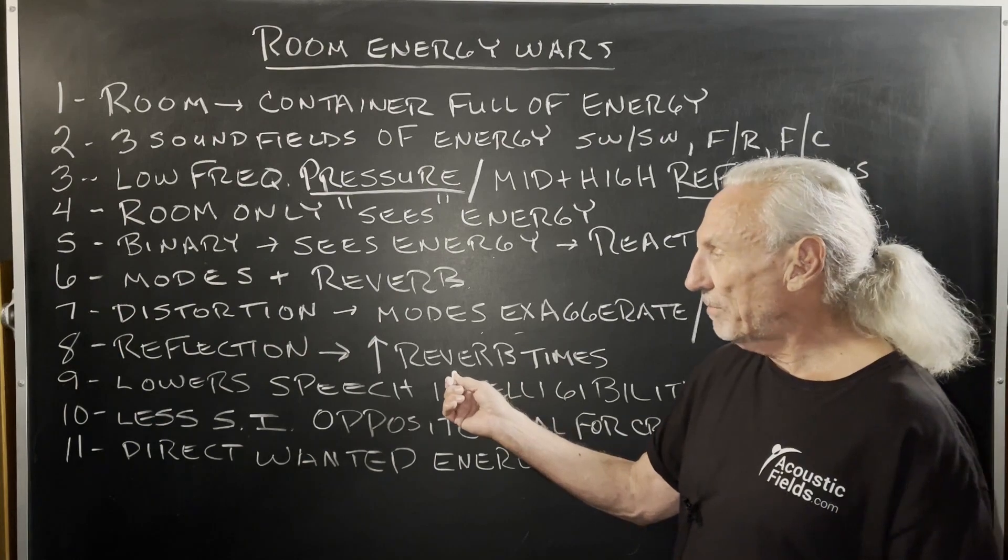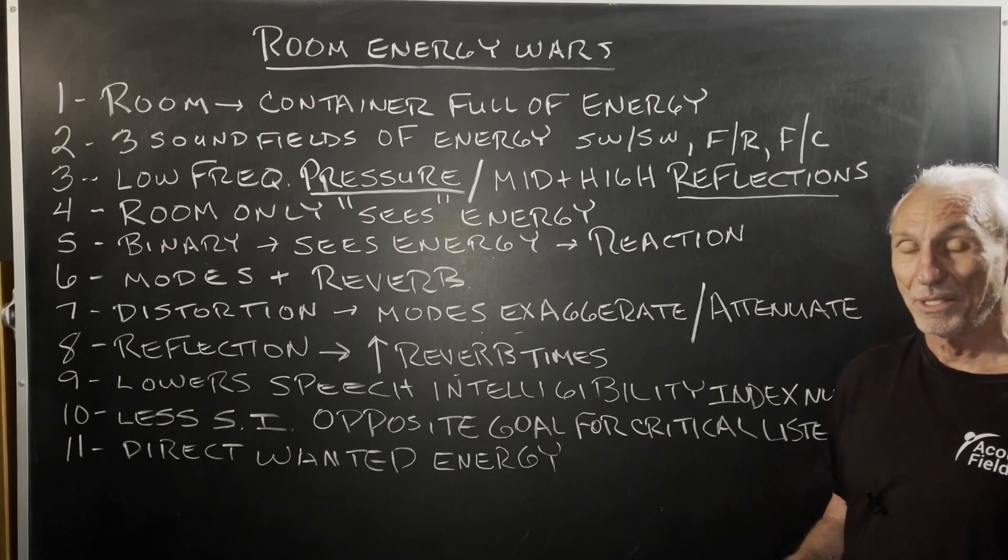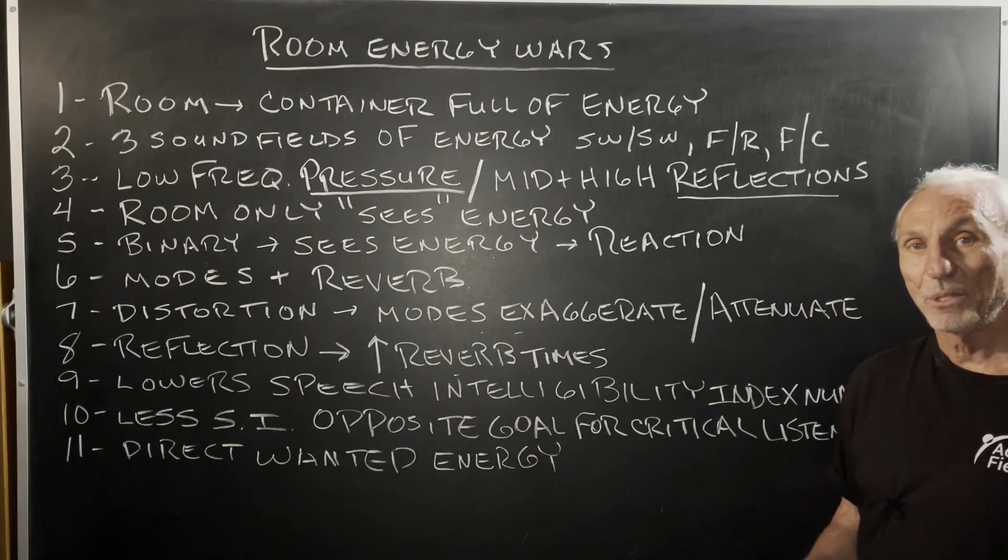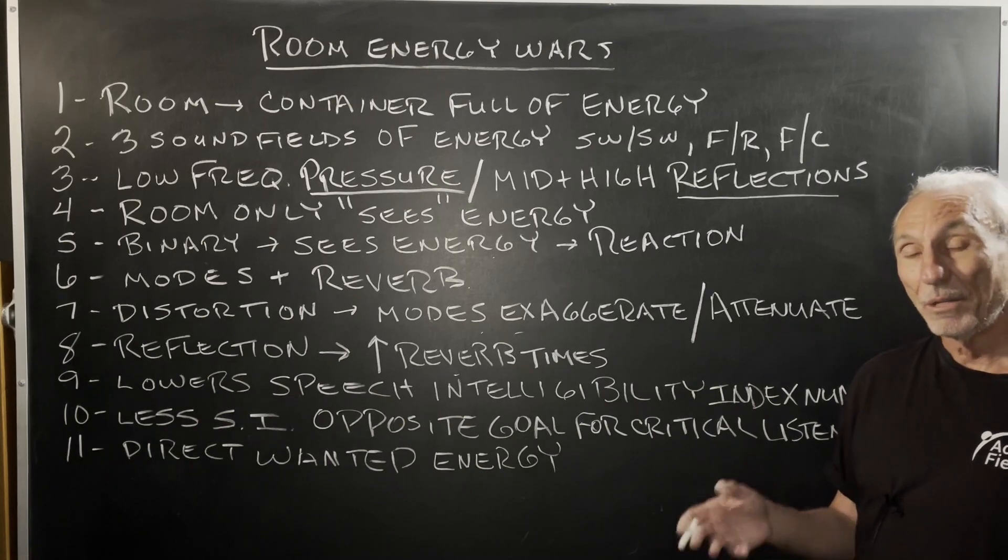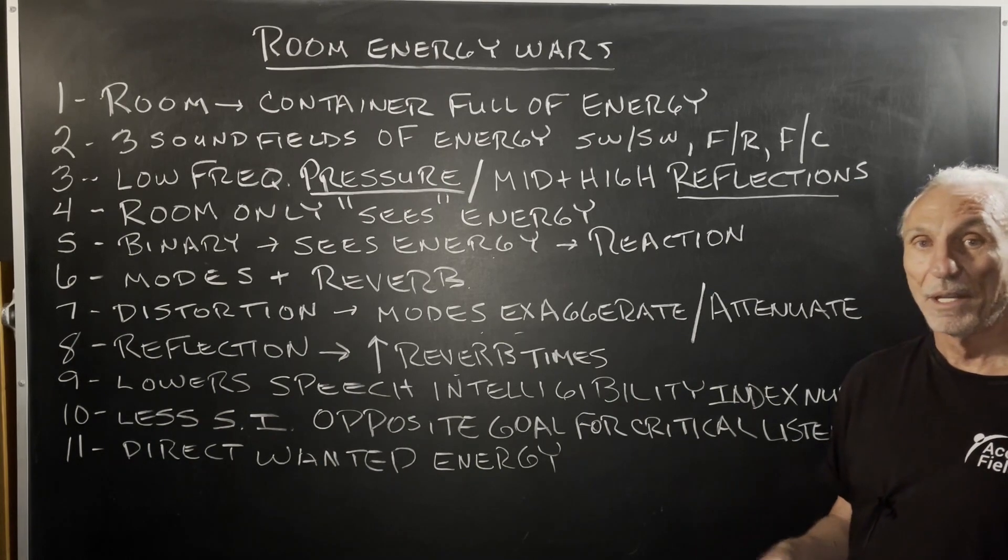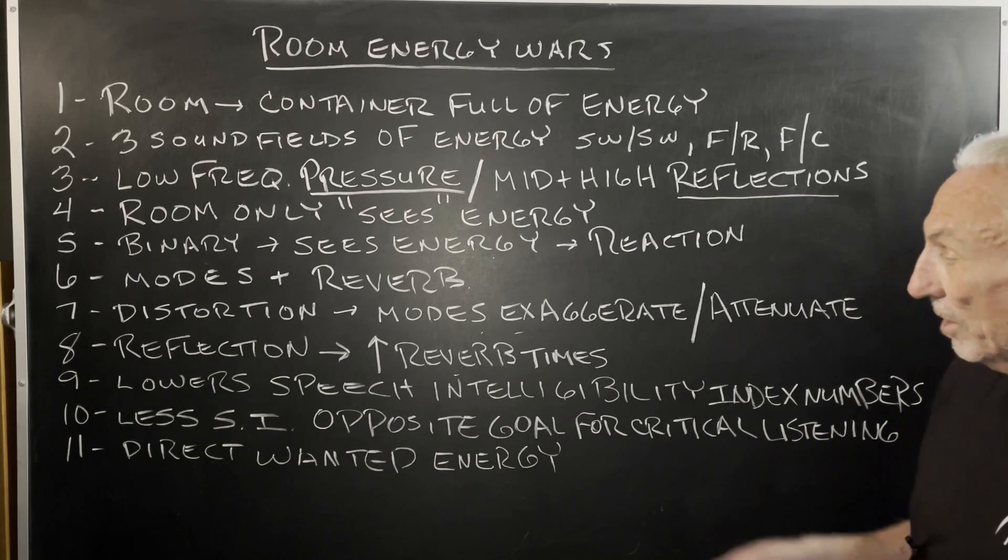But what does reverb do? Well, it increases speech intelligibility or lowers speech intelligibility index numbers. Speech intelligibility is defined as how many words in a 10-word sentence we can clearly hear. We shoot for 8 in churches, public events, 9 and 10 in critical listening environments, even theaters, home theaters. So it's all about resolution.